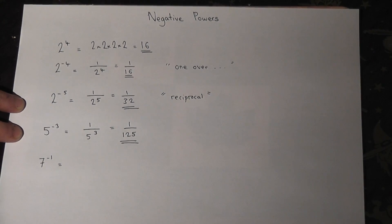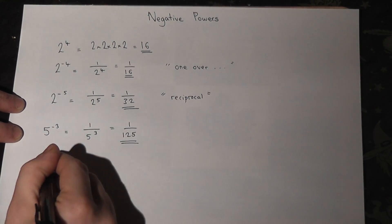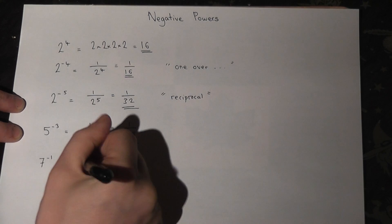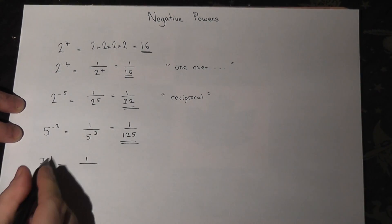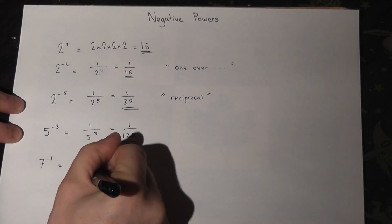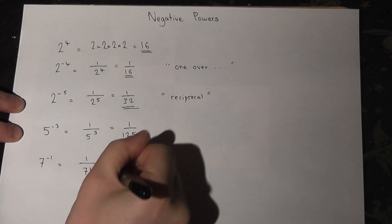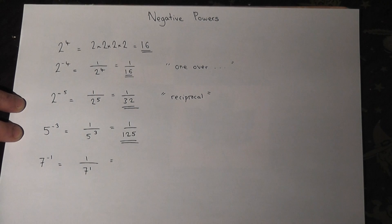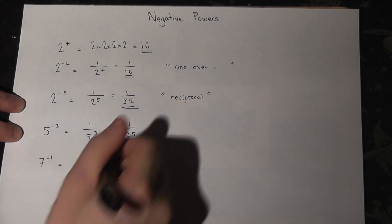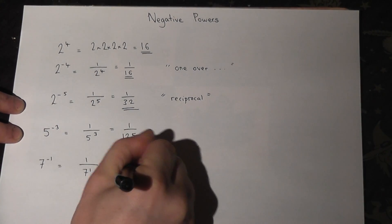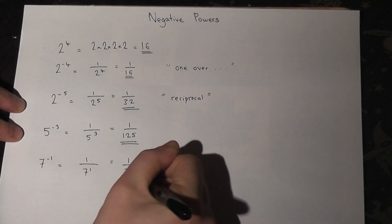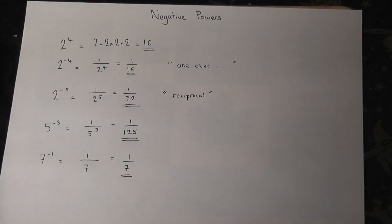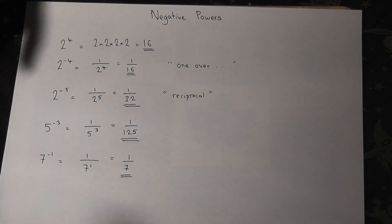And the last one — the negative just means 1 over, and it's 7 to the power of 1. Well, 7 to the power of 1 is just 7, so it's just 1 over 7.